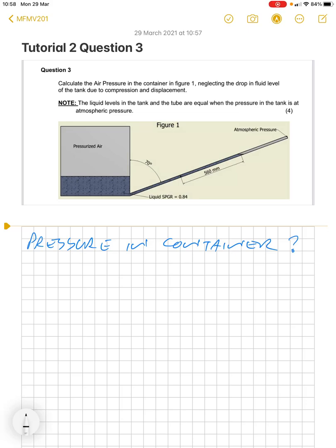In tutorial 2 question 3, we have a pressurized tank which has liquid at the bottom and pressurized air at the top, with a pipe angled at 70 degrees pumping out the side.